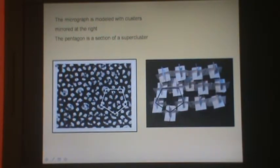On the micrograph, a cluster can be identified by 10 sub-clusters arranged on a circle around a tripartite center. Five clusters represent a section of a supercluster in this hierarchic model.